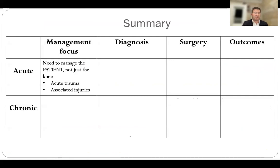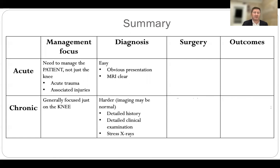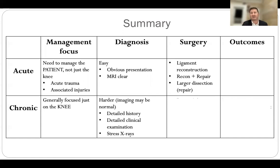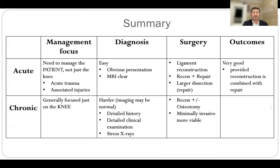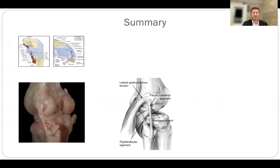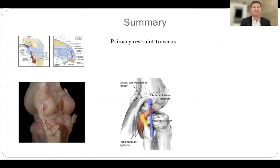To summarize the difference between acute and chronic management: in the acute case, focus on the patient — not just the knee — due to associated injuries. In the chronic case, focus is on the knee alone. Diagnosis in the acute case is straightforward with clear MRI findings, whereas in chronic cases the MRI is often normal and you need a detailed history, detailed clinical exam, and good stress X-rays. Acute surgery is ligament reconstruction combined with repair using a larger dissection; the chronic case is reconstruction plus or minus osteotomy for varus malalignment, potentially with a more minimally invasive approach.